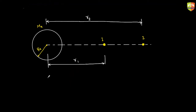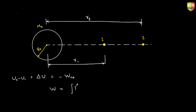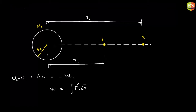Can you use this definition of potential energy — delta U equals negative of the work done by the gravity force — to find the change in potential energy between point one and two? So delta U is u2 minus u1. Try to use the formula: work done is integral of F dot dr, where F is the force of gravitation.